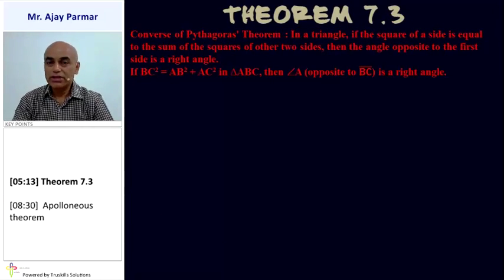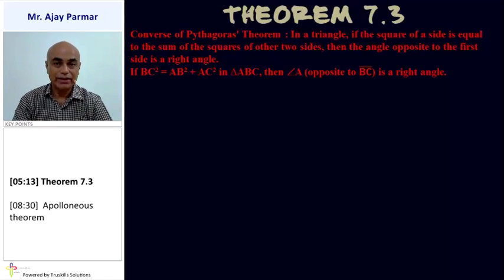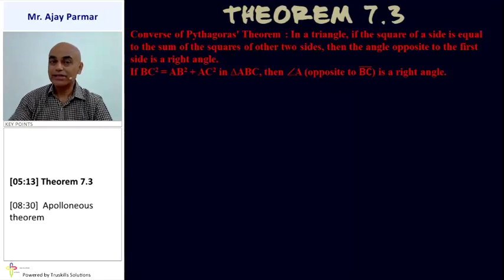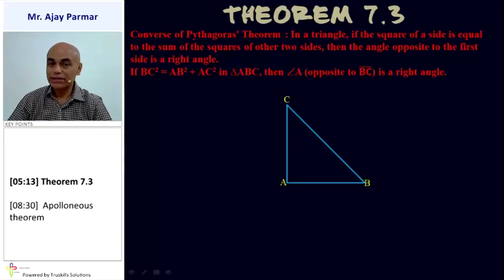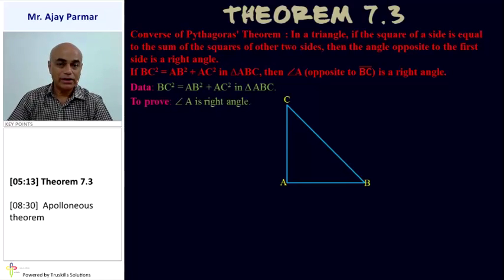Theorem 7.3 is the converse of Theorem 7.2, that is, the converse of Pythagoras theorem. In a triangle, if the square of the length of one side is equal to the sum of the squares of the other two sides, then the angle opposite to the first side is a right angle. Mathematically: if BC² = AB² + AC² is given, then angle A — the angle opposite to side BC — is a right angle. So it is given that BC² = AB² + AC², and we need to prove that angle A is a right angle.